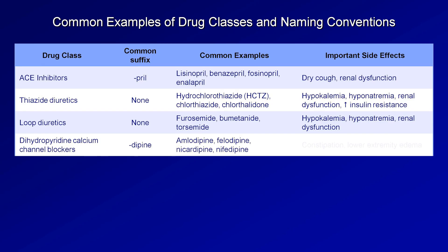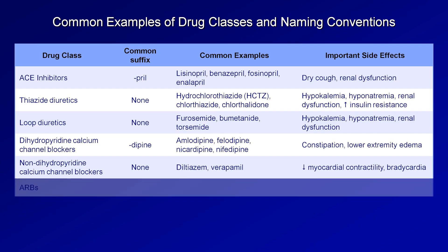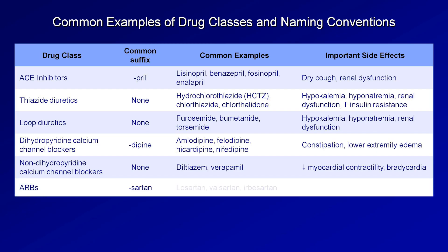The non-dihydropyridines have no common suffix and essentially just include diltiazem and verapamil. As you might expect, they can lead to low cardiac output and bradycardia. The ARBs end in -sartan, such as losartan, valsartan, and irbesartan. They can cause renal dysfunction.